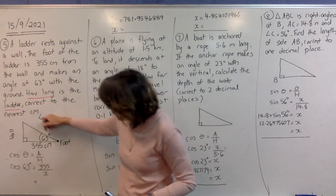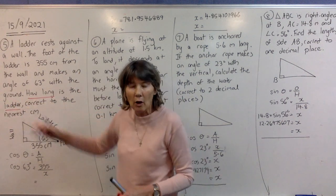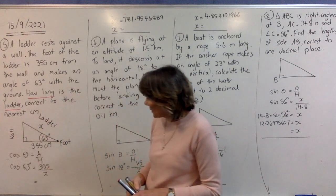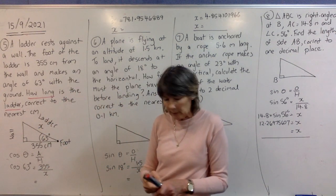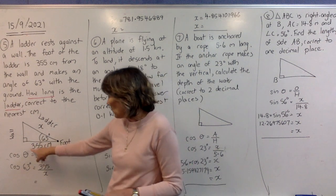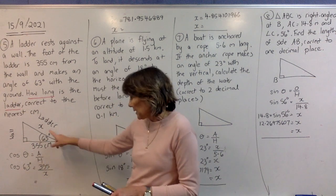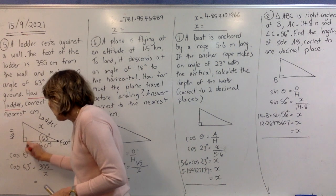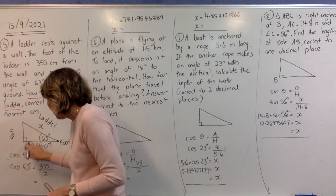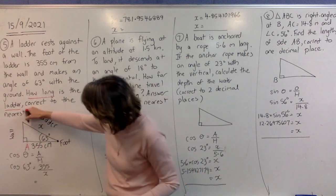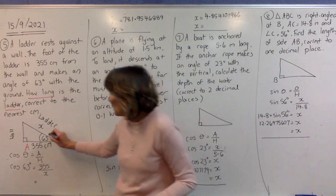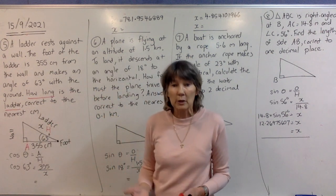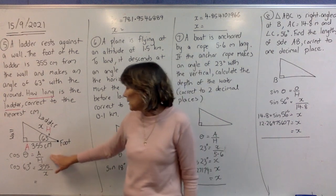We're looking for the length of the ladder, so that's x. The side we know — 355 cm — is adjacent to the angle, so we'll label it A. The side we're looking for is the hypotenuse. Since we're using adjacent and hypotenuse, that means we're using cosine.